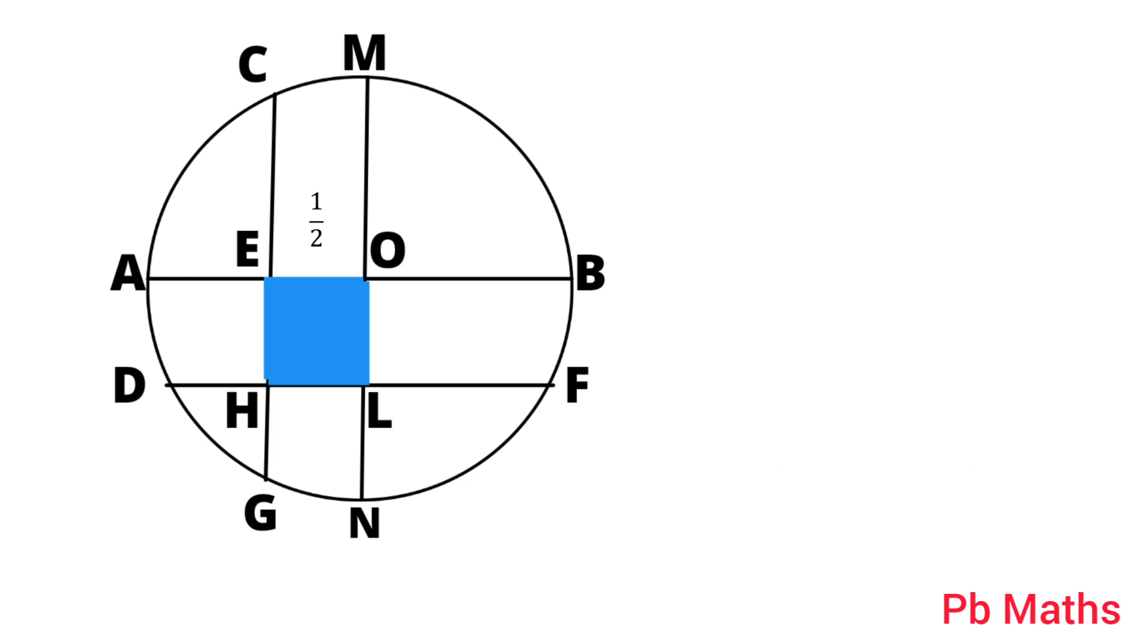EO and HL are the opposite sides of rectangle OEHL. Therefore, the length of HL is also 1/2 cm.